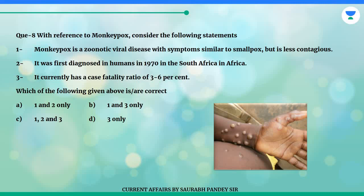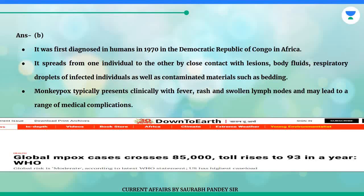Question 8. With reference to monkeypox, consider the following statements. 1. Monkeypox is a zoonotic viral disease with symptoms similar to smallpox but is less contagious. 2. It was first diagnosed in humans in 1970 in South Africa. 3. It currently has a case fatality ratio of 3 to 6%. Which of the following given above is correct? A. One and two only. B. One and three only. C. One, two and three. D. Three only. The answer is B. It was first diagnosed in humans in 1970 in the Democratic Republic of Congo in Africa.